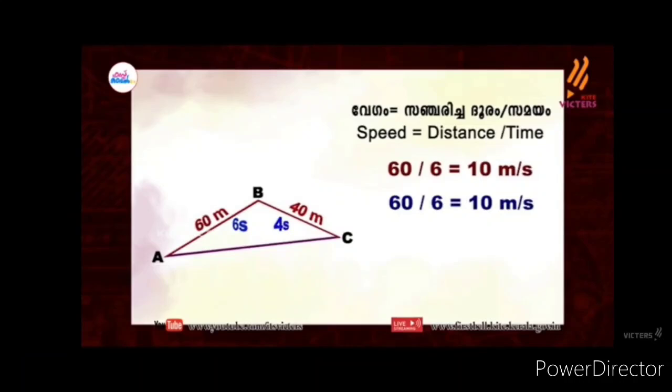Speed equals distance by time. A to B to B: 60 divided by 60 is equal to 10 m per second.